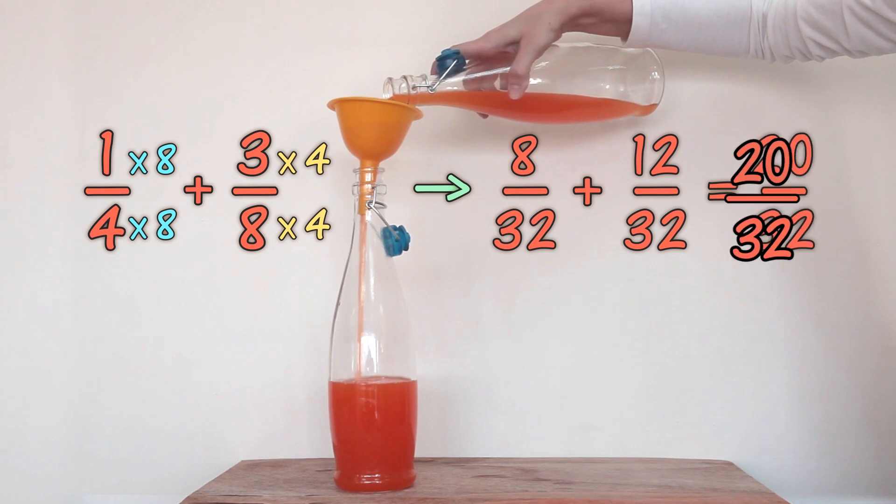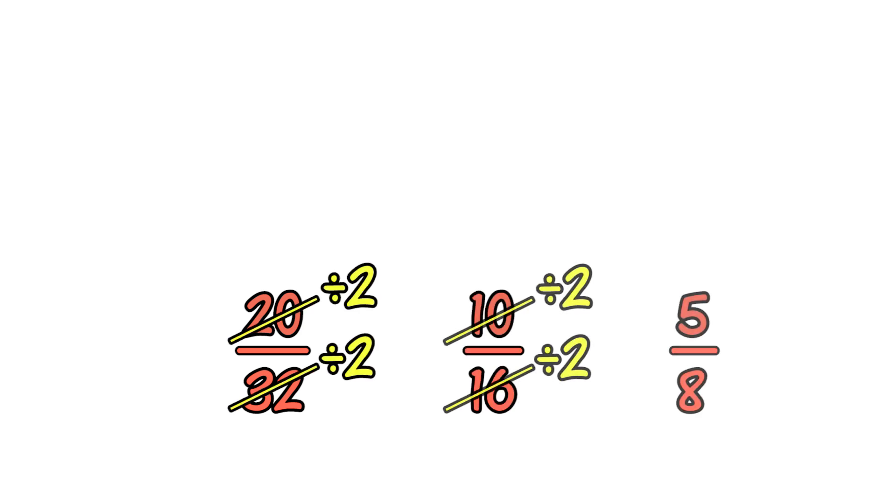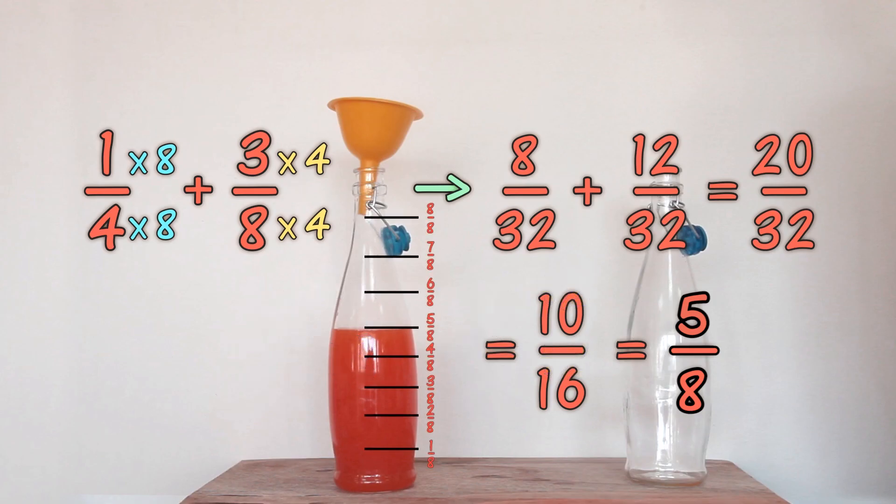Now simplify the fraction. Twenty-thirty-seconds to ten-sixteenths, then to five-eighths by dividing the top and bottom by two each time. And that is as simple as it can get. The bottle is five-eighths full.